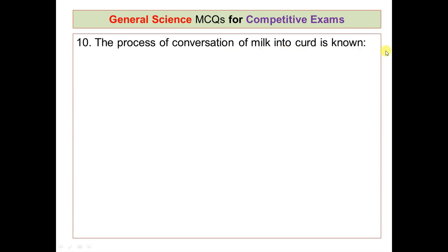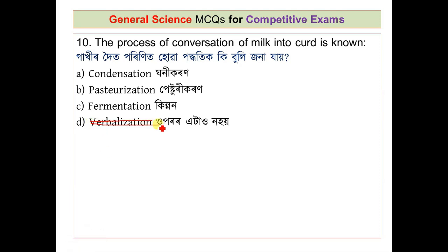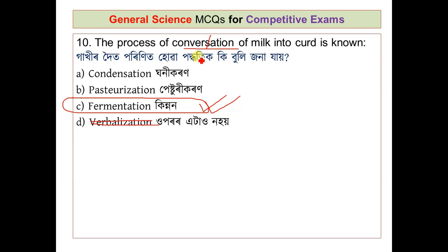Question number 10: the process of conversion of milk into curd is known as what? The options are condensation, pasteurization, fermentation, and coagulation. The correct answer is fermentation (option C). The process of conversion of milk into curds is achieved through fermentation.